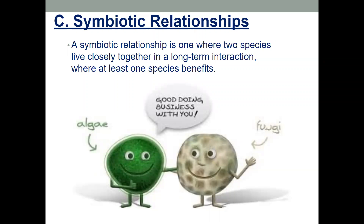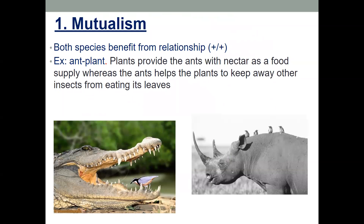Mutualism is when both species benefit from the relationship. For example, bees fly from flower to flower gathering nectar, which they make into food — that benefits the bee. When they land on a flower, they get pollen on their hairy bodies, and when they land on the next flower some pollen rubs off, pollinating the plant. It's a mutualistic relationship: the bees get to eat and the plants get to reproduce.